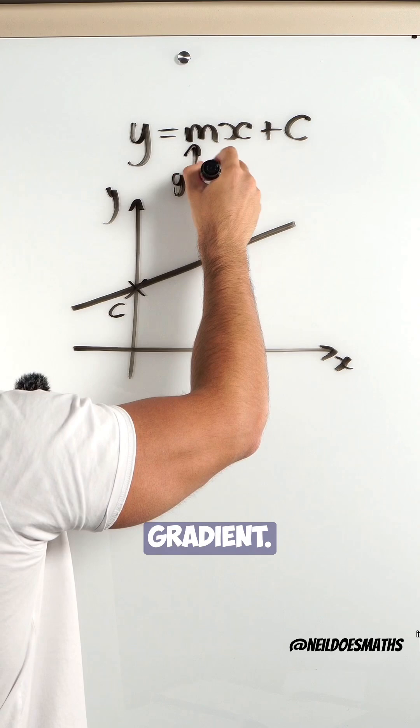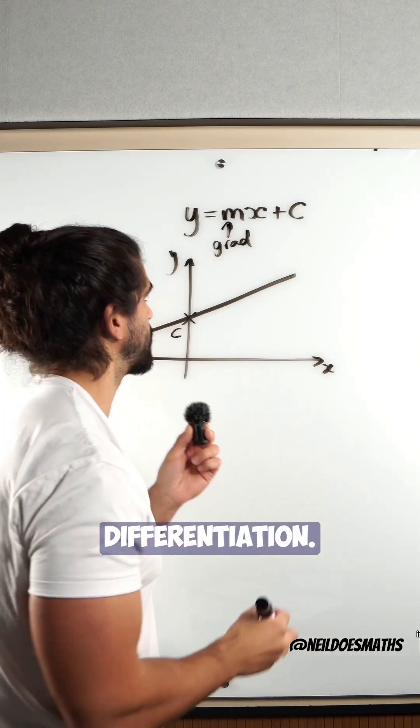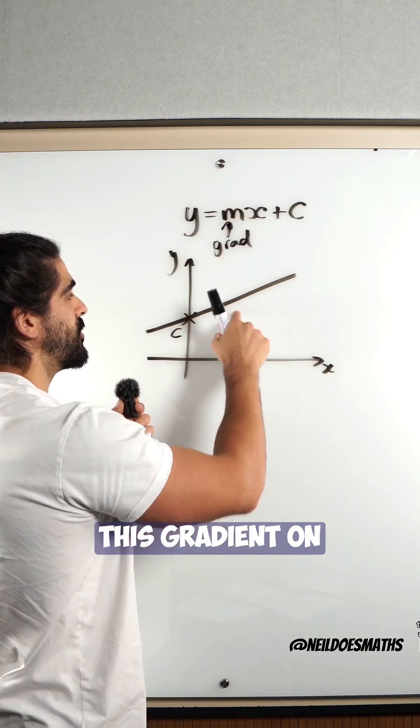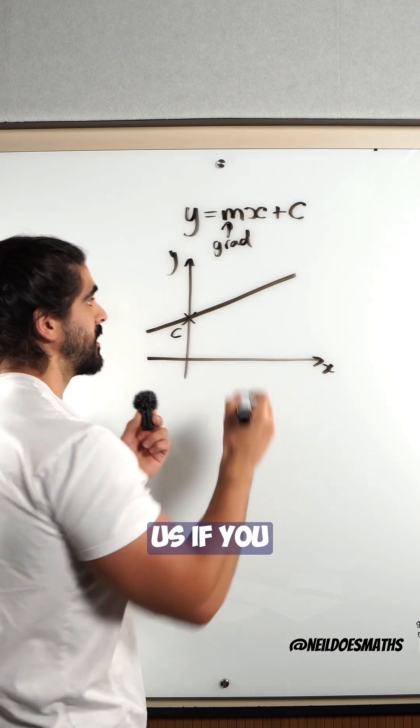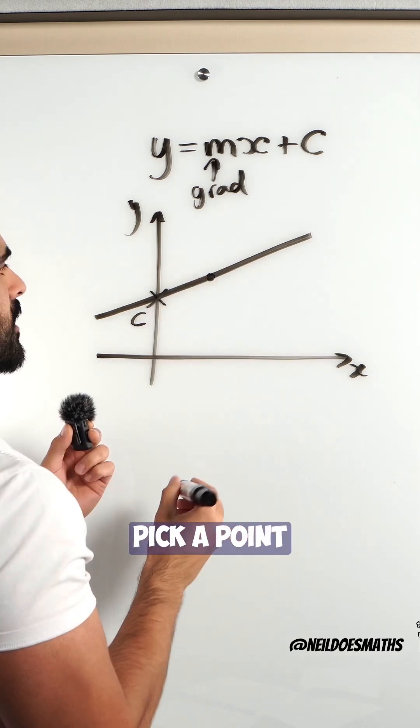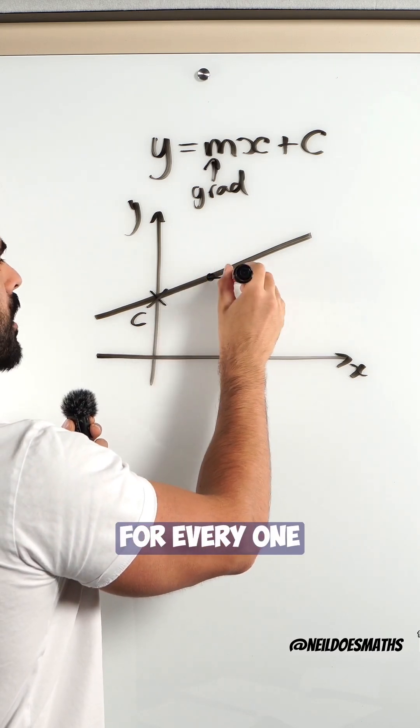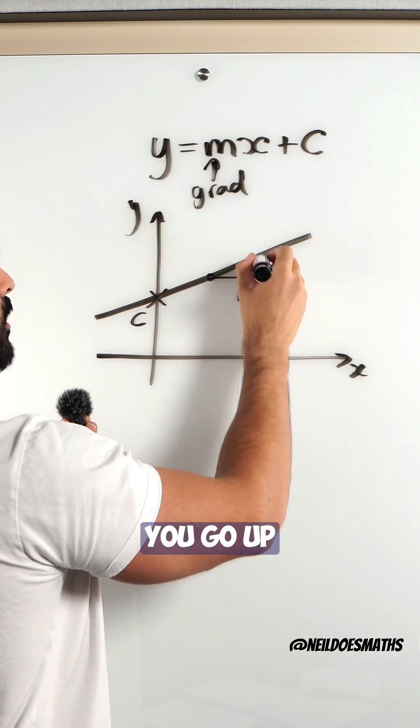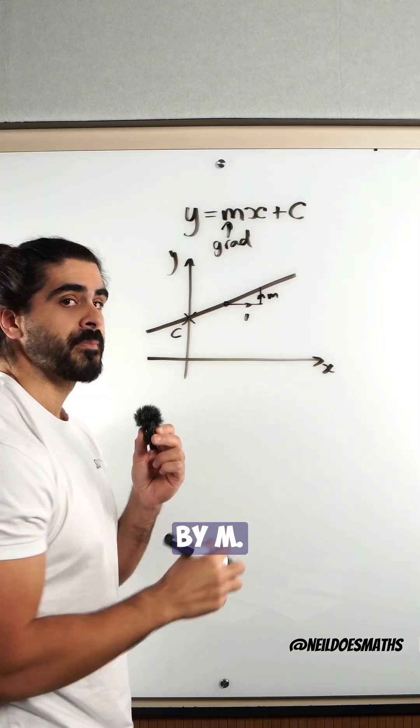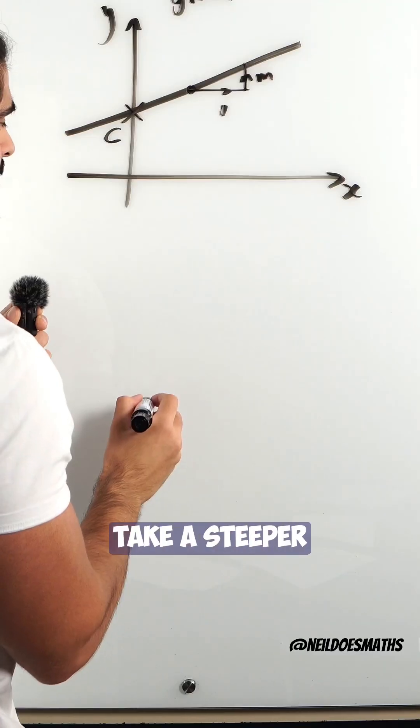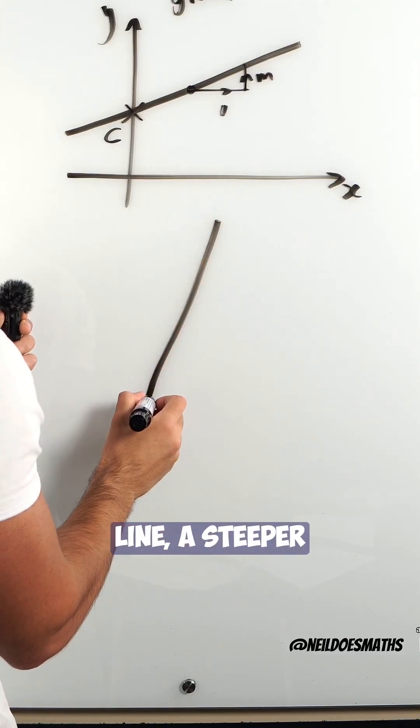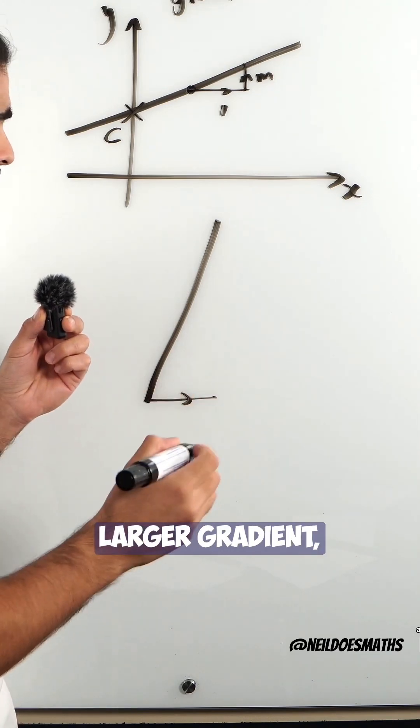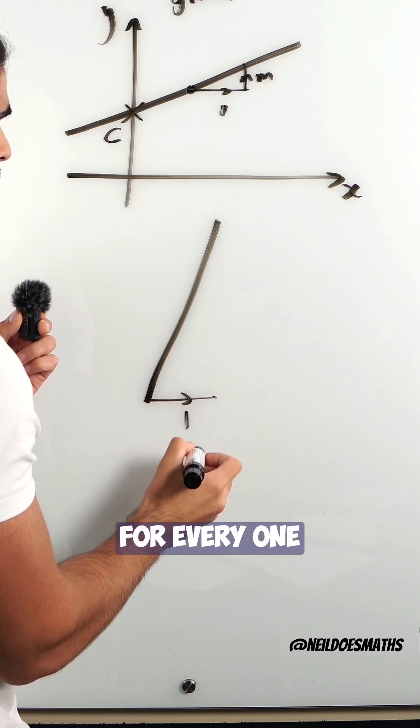Now this is the most important part of the line for differentiation. This gradient on this line tells us if you pick a point on the line, for every one you go across you go up by m. So if I take a steeper line, a steeper line means a larger gradient, meaning for every one you go across you have to go up by a larger amount.